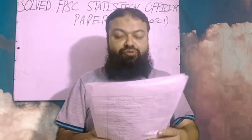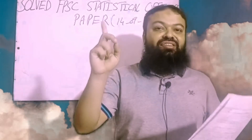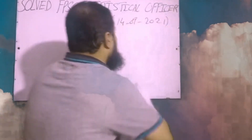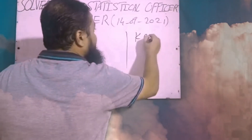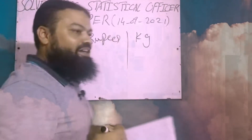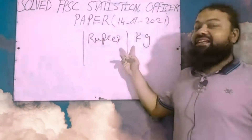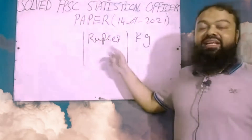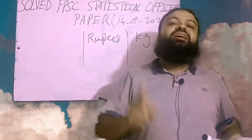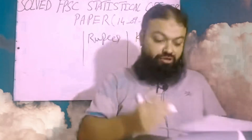Question number six: which measure of dispersion is used for comparison? The coefficient of variation (CV) is the correct option. If you have two data sets — one given in kilograms and the second given in rupees — whenever we want to compare two different data sets where the units are different and we want to find which has less variation, then the coefficient of variation is used. A very important concept.